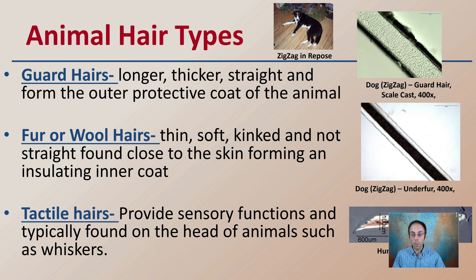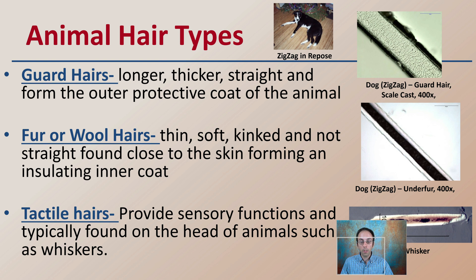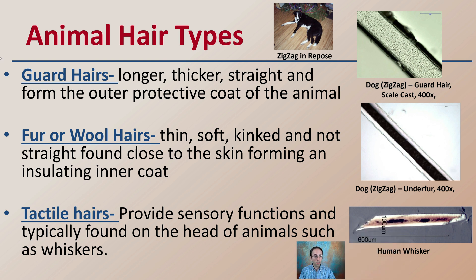There are different types of animal hair. When looking at comparison, we are often looking at guard hairs, which are thicker, longer, straight, and form the outer protective coat of an animal. Fur or wool hairs are thinner, often soft, kinked, and not straight, found close to the skin forming an insulating inner coat. Tactile hairs provide sensory functions and are typically found at the head of animals, such as the whiskers. We can see the stark difference in those animal hair types from the same dog at 400 times magnification.